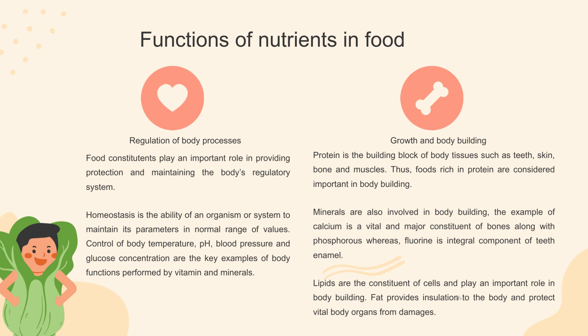The third function is the regulation of body processes. Food constituents play an important role in providing protection and maintaining the body's regulatory system. Homeostasis is the ability of an organism or system to maintain its parameters in a normal range of values. Control of body temperature, pH, blood pressure and glucose concentration are key examples of body functions performed by vitamins and minerals. The fourth function is growth and bodybuilding. Protein is the building block of body tissues such as teeth, skin, bone and muscles, so foods rich in protein are important in bodybuilding. Minerals are also involved; calcium is a vital constituent of bones along with phosphorus, while fluorine is an integral component of teeth enamel. Lipids are constituents of cells and play an important role in bodybuilding, and fat provides insulation and protects vital body organs from damage.